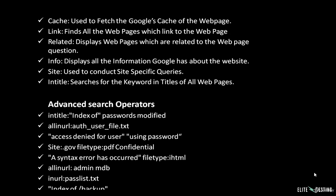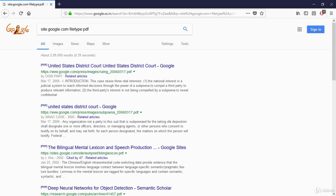There are some advanced search operators which give useful results in Google hacking. For example, intitle:"index of" password modified will give you a list of modified passwords. site:.gov filetype:pdf confidential gives you a list of confidential data. A syntax error search with filetype:ihtml gives error details useful in information gathering.